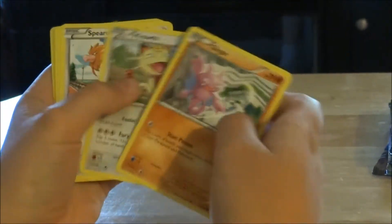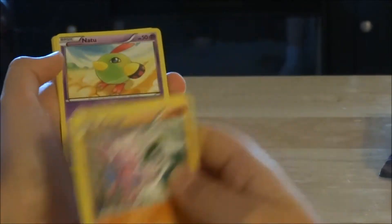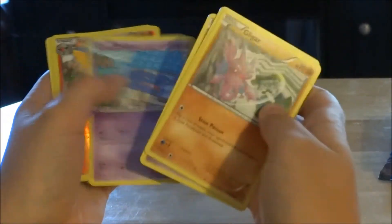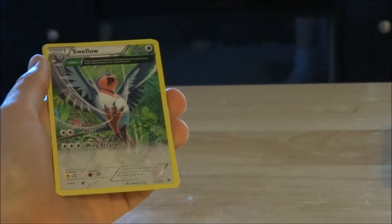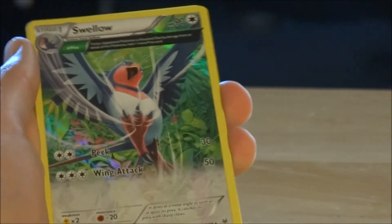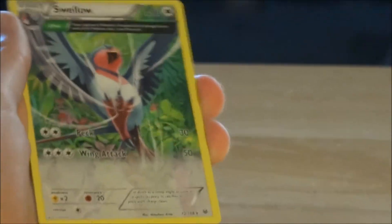Gligar, Meowth, Fearow, Natu, Shuppet, Reverse Fletchinder. Oh, that card looks so awesome. Holo Swellow.